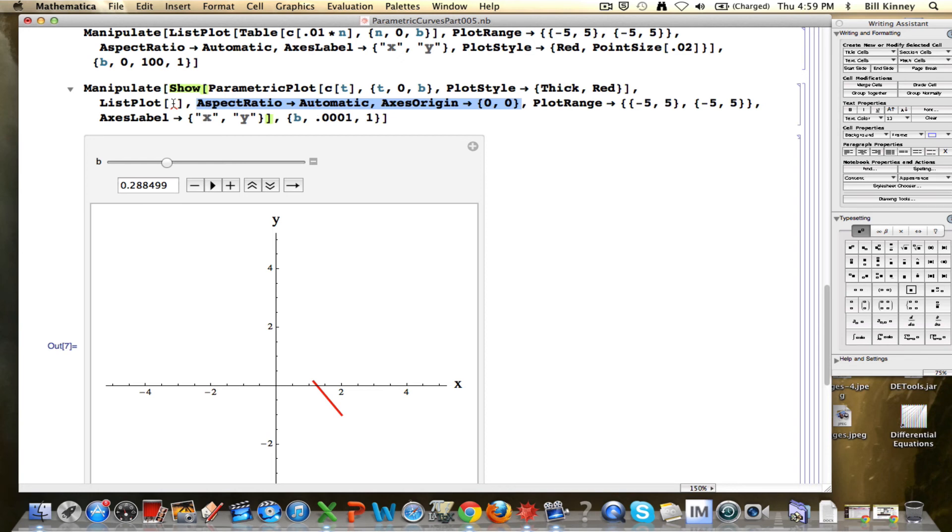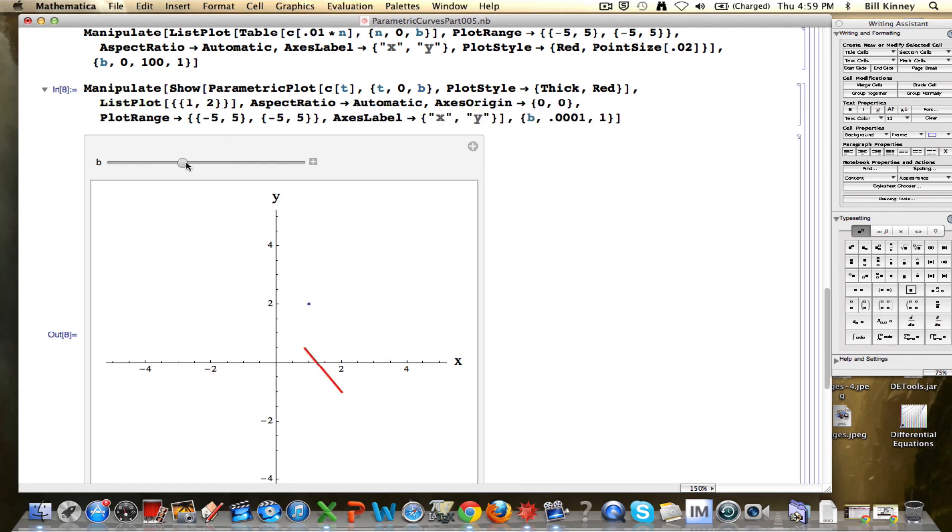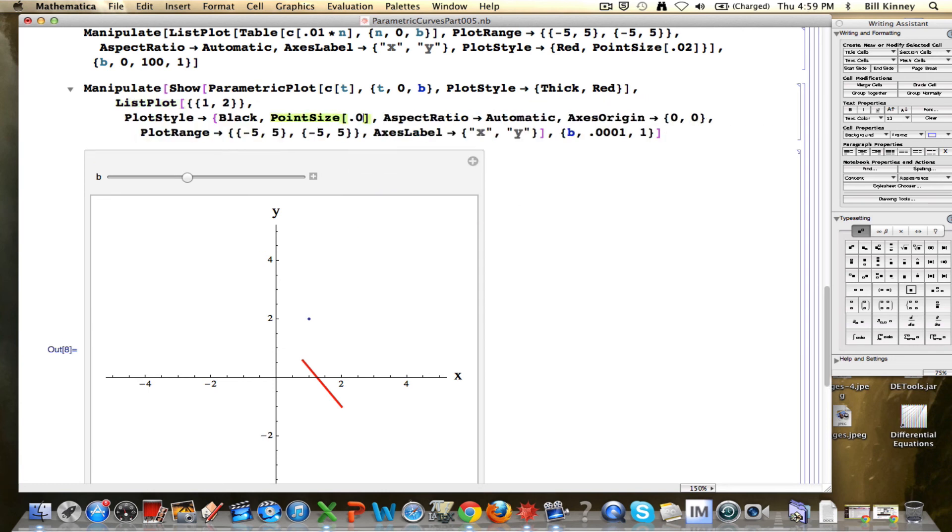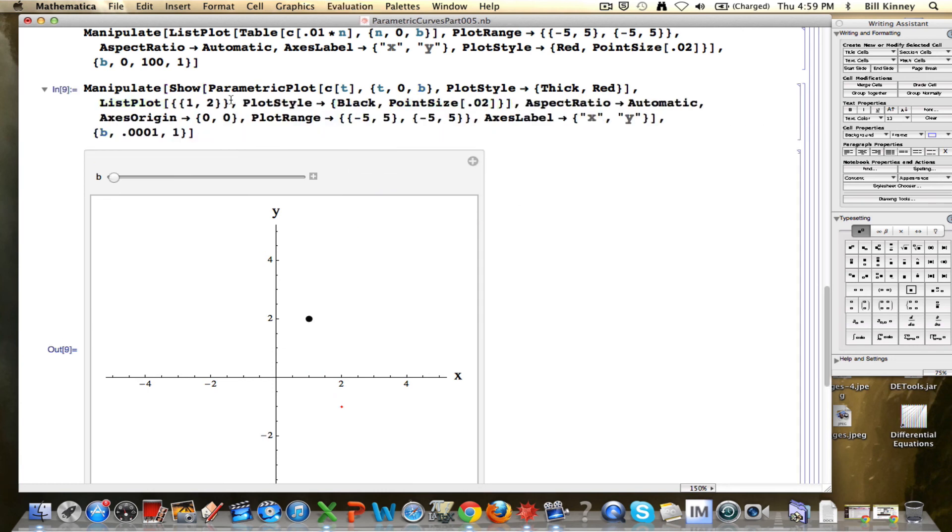So list plot is going to get combined with parametric plot. What do I want to plot with list plot? Remember, list plot plots points. For example, the point one, two could be plotted. There it is, that black dot there. Let me make it bigger, plot style, I'll make it black as well, black, point size, say 0.02. But that's just a static black dot, and it's not in the right place. If I replace this one, comma, two with a c of b, not c of t, but c of b, that's going to be the location of the person at time b as b changes.